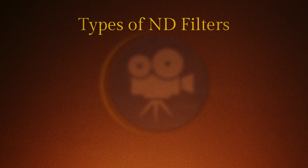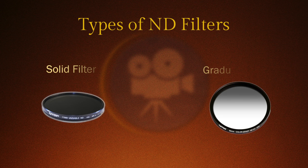There are two types of ND filters: solid and graduated. Solid NDs are what most people are familiar with — they decrease the exposure uniformly across the whole image. Graduated filters, on the other hand, change in intensity across the filter.